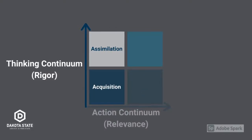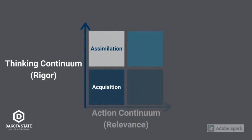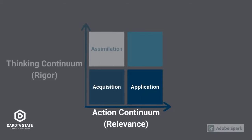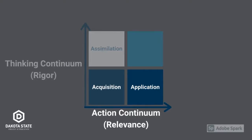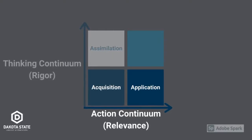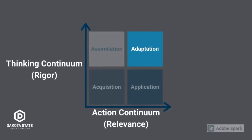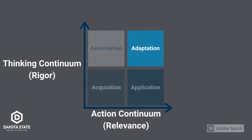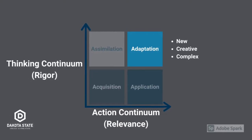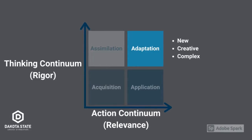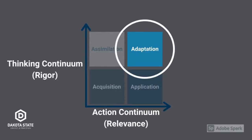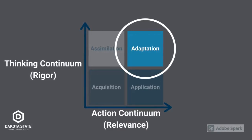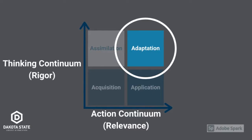The thinking continuum is based on Bloom's taxonomy and goes from the acquisition to the assimilation of knowledge. The action continuum, or application model, moves from the acquisition to the application of knowledge. When a task is on the high end of both continua, it is in the adaptation quadrant — where students can adapt their knowledge to new, creative, and complex tasks. Ideally, we want students working in this adaptation quadrant as often as possible, and technology can be a helpful tool for this type of task.